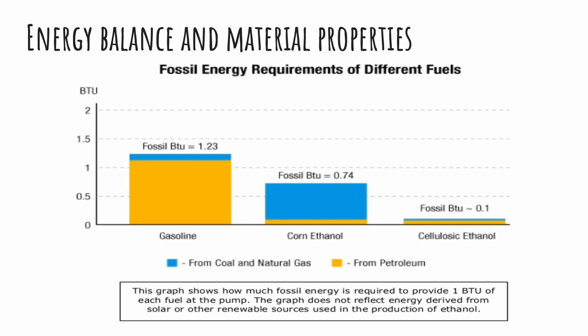Some vehicles, called flex fuel vehicles, run on 85% ethanol and some run even on 100% ethanol. While ethanol delivers less energy than gasoline on a gallon-for-gallon basis, today's vehicles are designed to run on gasoline blended with small amounts of ethanol with no perceptible effect on fuel economy.